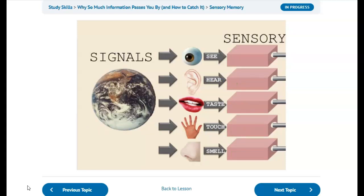The signals fade away if they're not dealt with in a short time. We'll focus on two of the five senses in this course: the sensory memory for seeing and hearing. Most of the information you process when you study comes from these two senses. The sensory memory store for seeing is called the icon. It is very short-lived, lasting less than a second.